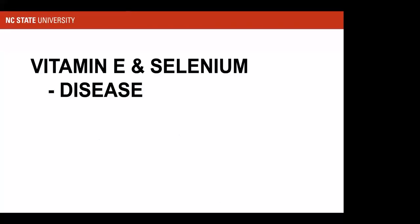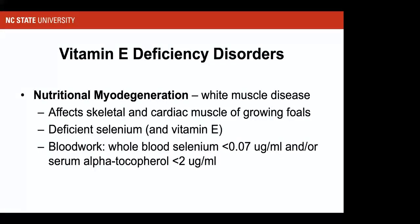Good sources on muscle disorders include Dr. Valberg's lab in Minnesota and Dr. Finno from UC Davis. Several muscle disorders are associated with lower intakes of vitamin E and selenium. One well-recognized condition is nutritional myodegeneration, better known as white muscle disease, seen primarily in growing foals. It results from deficient selenium and likely deficient vitamin E in the diet.